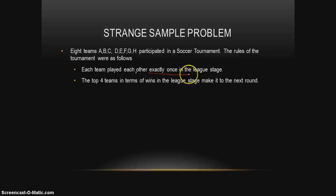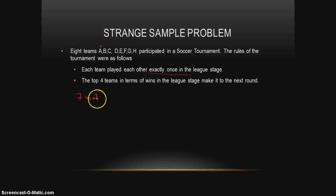The first rule is that each team played each other exactly once in the league stage. So if we're talking about team A, it played against all other teams — B, C, D, E, F, G, and H — exactly once. Similarly for B, it played against all other teams exactly once. This implies that each team played 7 matches.